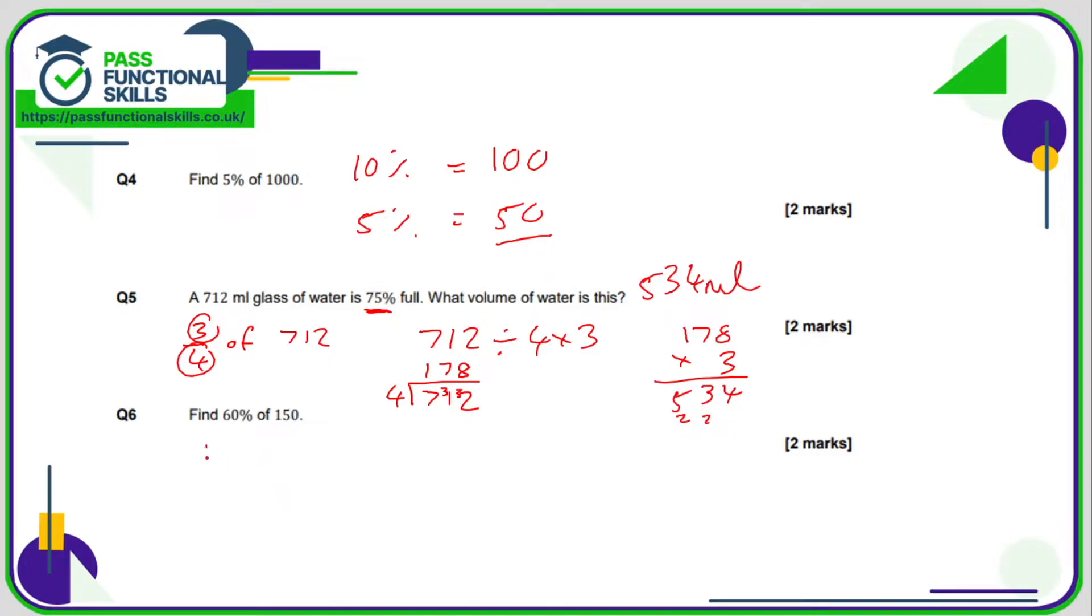Question 6, let's work out 10% first of all. One tenth of this amount is 10%, so just chop off the 0. So 60%, that is 6 times more than 10%. So we want 6 times more than 15. 15 times 6 is 30, carry the 3. 1, 6 is 6, plus 3 is 90.